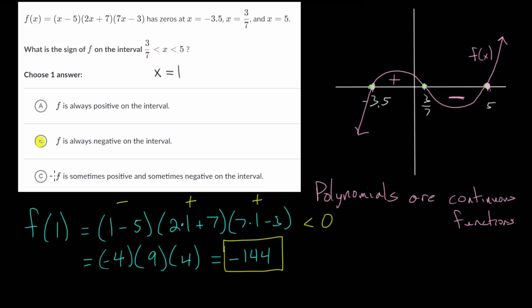Now choice C where it can be sometimes positive and sometimes negative, that would be the case if the question was asking what is the sign on the interval between -3.5 and 5. And so in that case it's not looking at two consecutive zeros, it's looking at three consecutive zeros.